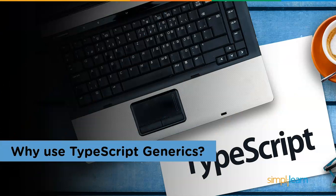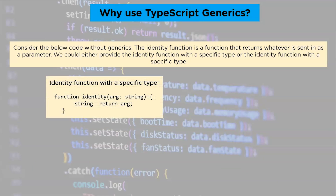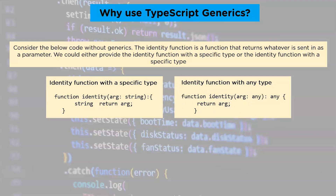Why use TypeScript generics? Consider the code without generics. The identity function is a function that returns whatever is sent in as a parameter. We could either provide the identity function with a specific type or with any type. While the use of any is generic, when we use any the function accepts any kind for the type of argument. As a result, when the function returns we lose information about what the type was — the only information we have is that any type could be produced if we pass in a string.